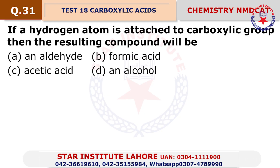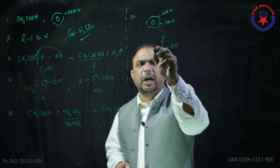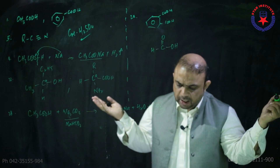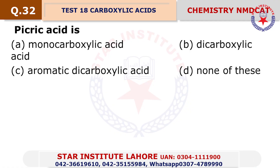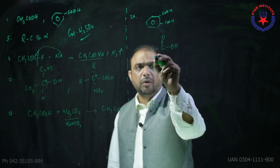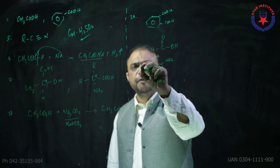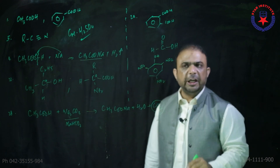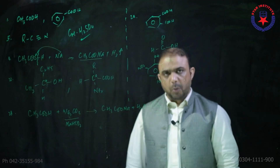Question number 31: If a hydrogen atom is attached to a carboxyl group, the resulting compound is formic acid — choice beta. Question number 32: Picric acid is 2,4,6-trinitrophenol. This is an identification test because sharp yellow needle-like crystals are formed during the reaction.